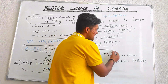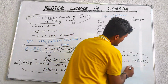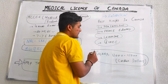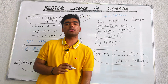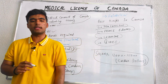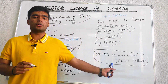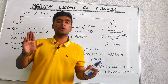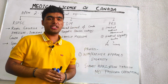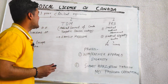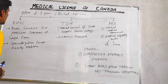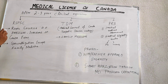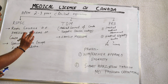The monthly salary is basically 12,000 to 15,000 Canadian dollars for a doctor. After gaining 2 to 3 years of clinical experience, there are three pathways available for post-graduation.